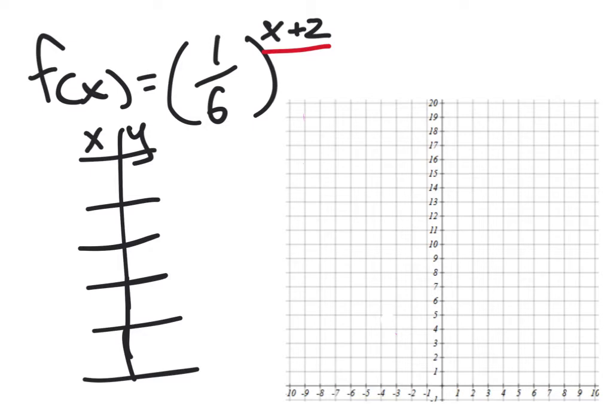Anything to the power of 0 is 1. But what value of x would make that 0? It would be negative 2. So that brings us to negative 2, 1 right here. So that purple graph that we showed, it's just shifted a little bit to the left.